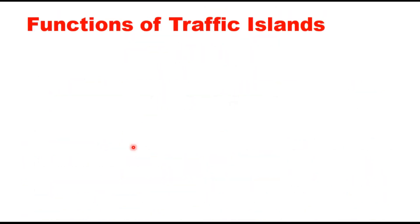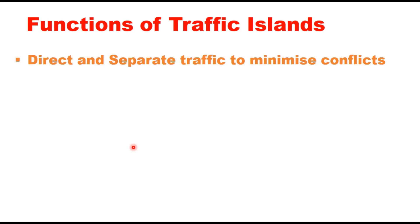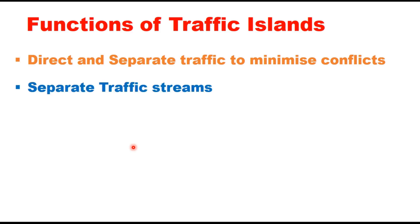The functions of traffic islands are many. The first one is to direct and separate traffic to minimize conflict. Traffic islands play an important role in allowing each vehicle movement and are useful to reduce the number of points where vehicles can conflict with each other while moving across the intersection. They are also used to separate the traffic stream along or across the movements of vehicles.